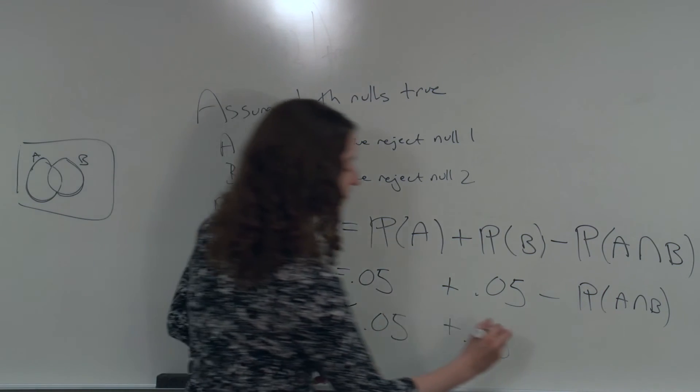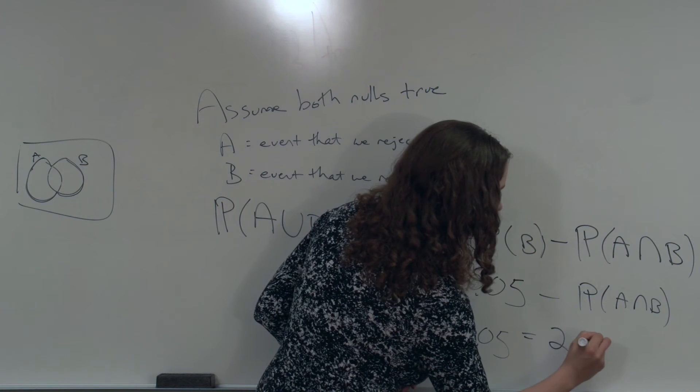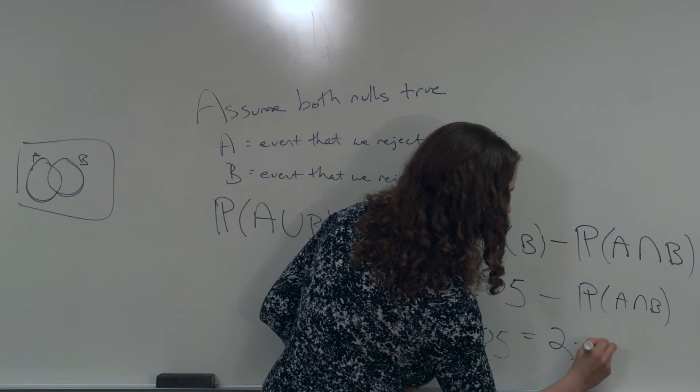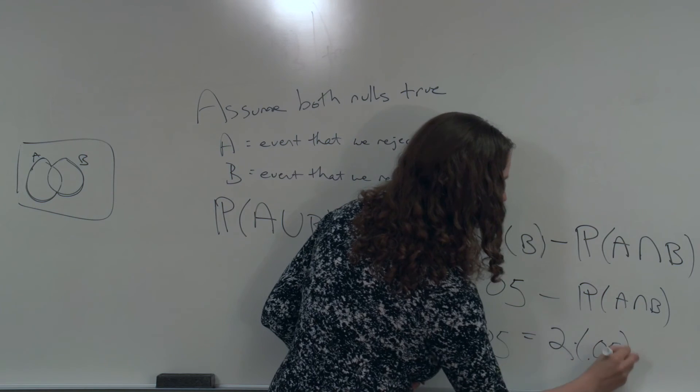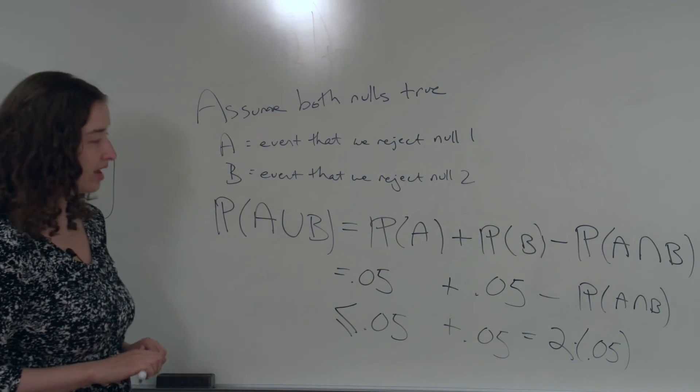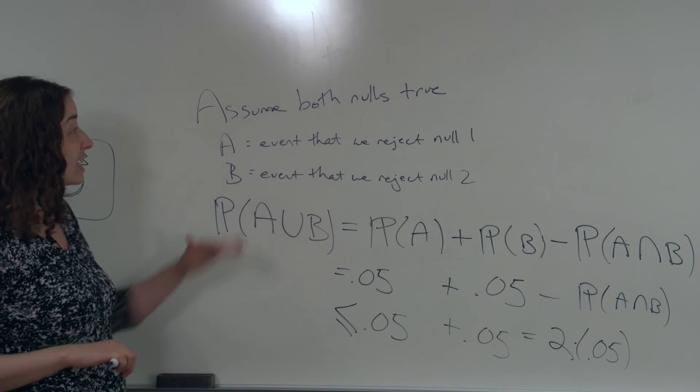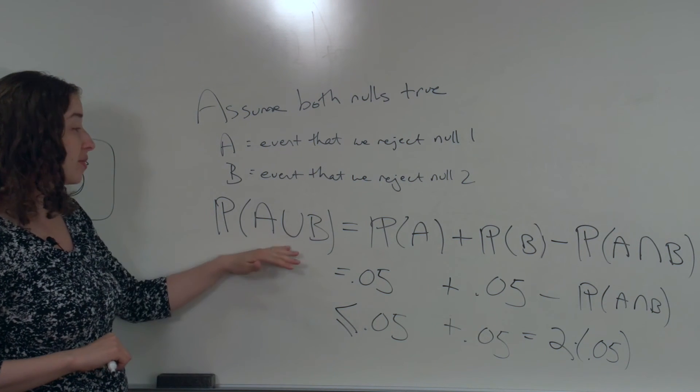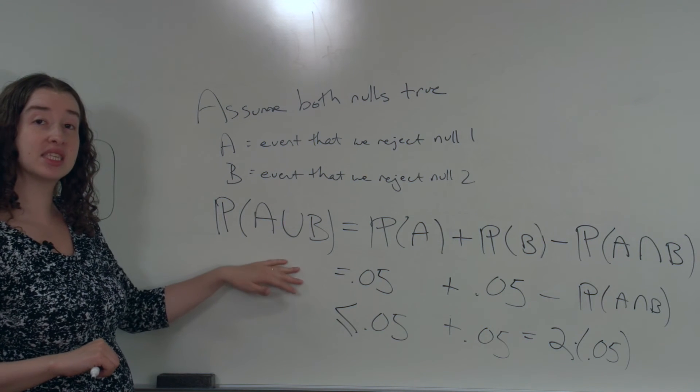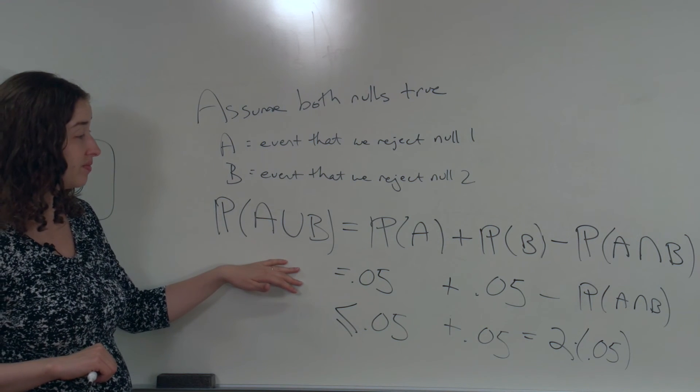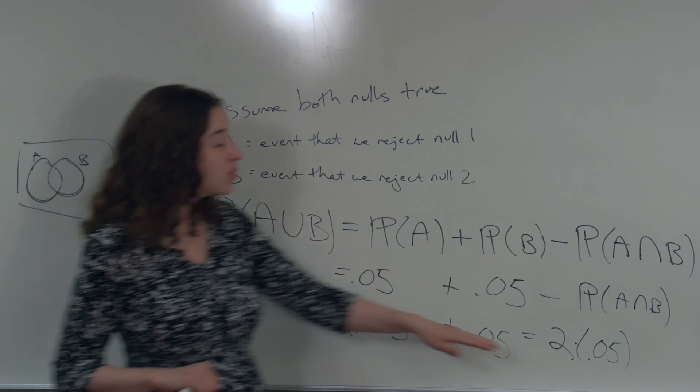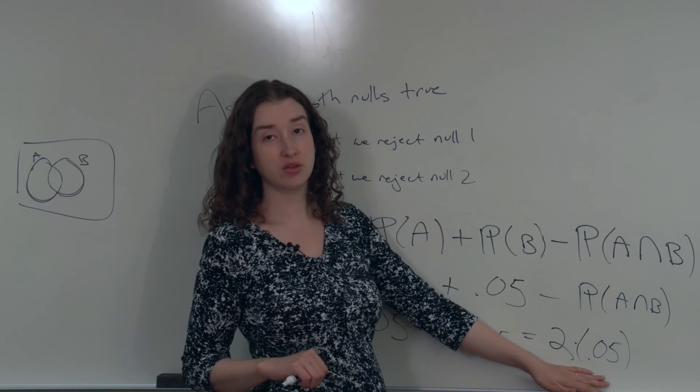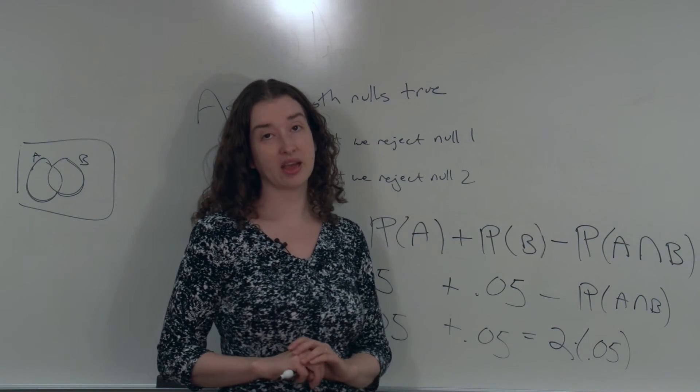0.05 plus 0.05 obviously is equal to 2 times 0.05. So what we've said is if both nulls are true and we're rejecting with p-value cutoffs of 0.05, the probability of making at least one mistake, at least one false rejection, is less than or equal to 0.1, 2 times 0.05. That's the probability calculation that we've done.